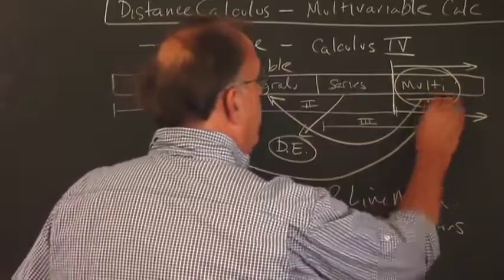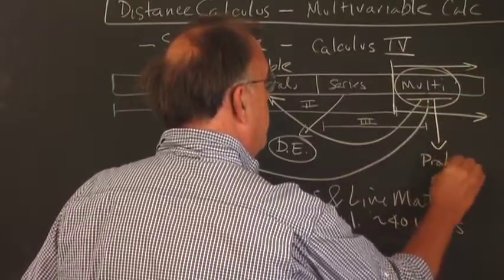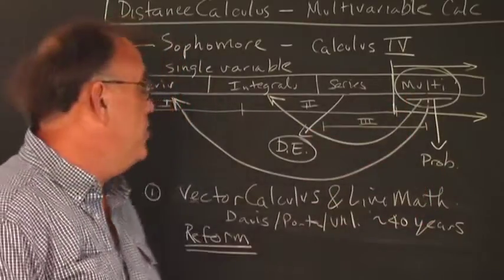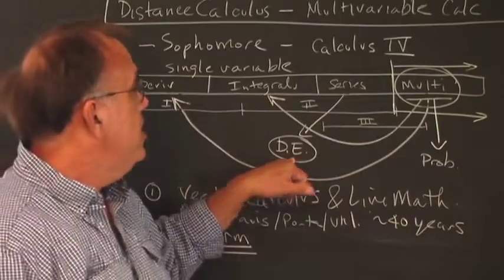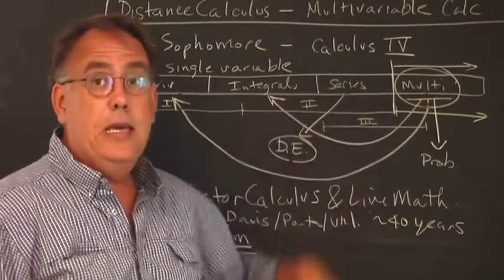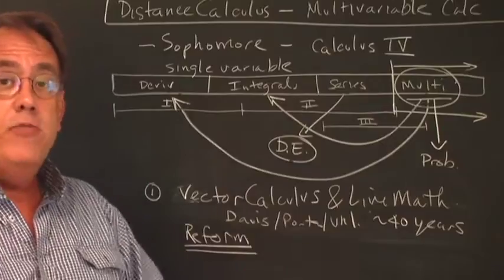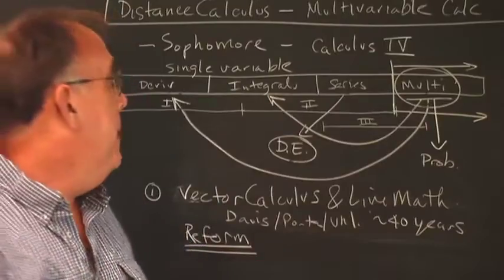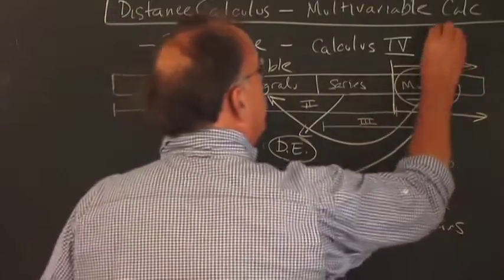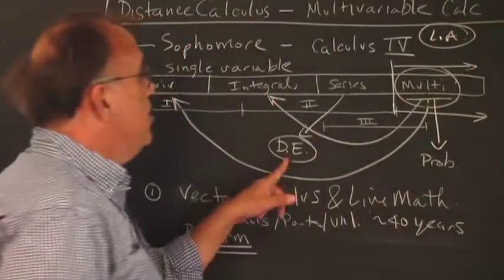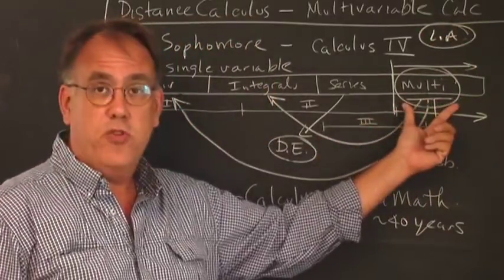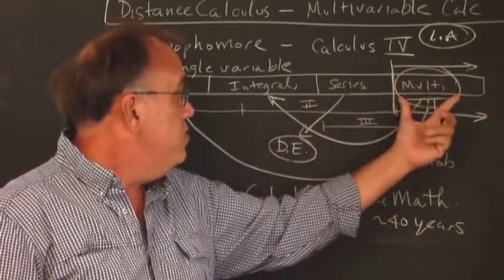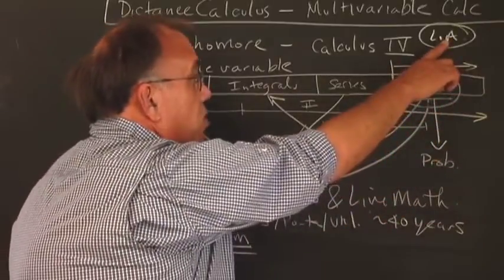Multivariable jumps off next into a probability course — you have to take multivariable first before probability. You can take differential equations, multivariable, and linear algebra all at the same time; they're all completely different courses and you don't need to take one before the other. Generally, I suggest students take the multivariable course first since it's easier than either differential equations or linear algebra. Once you complete it, you can take whichever of those courses you wish.